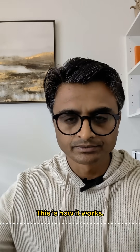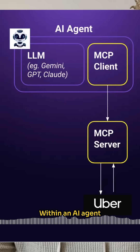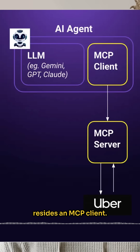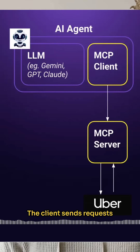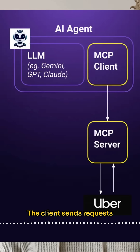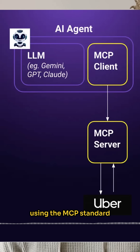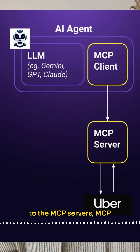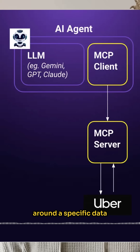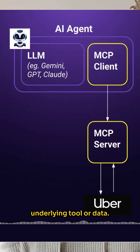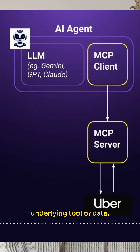This is how it works. Within an AI agent resides an MCP client. The client sends requests using the MCP standard to the MCP servers. MCP servers are wrappers around a specific data source, and they know how to interact with its underlying tool or data.